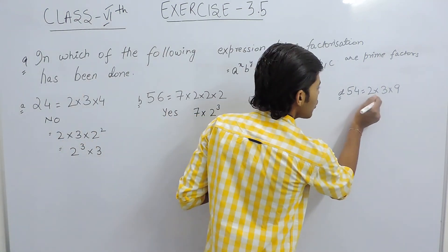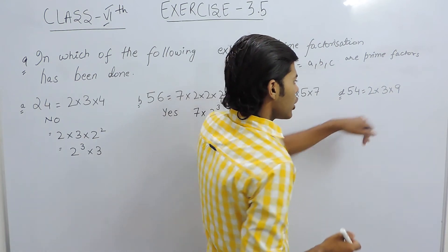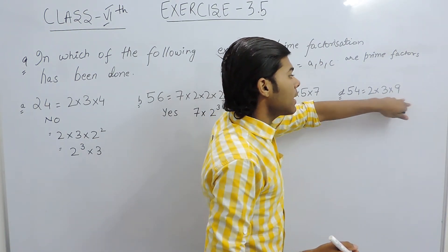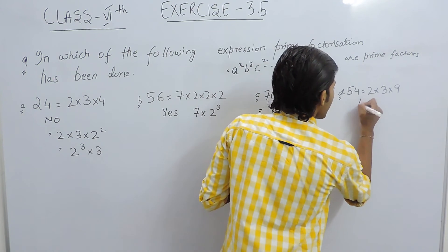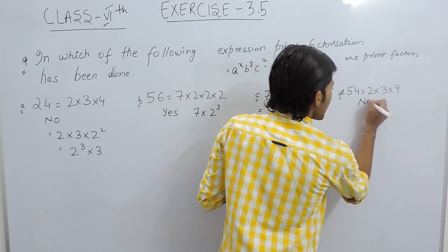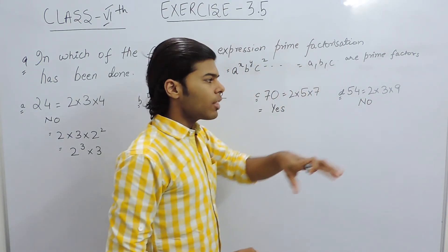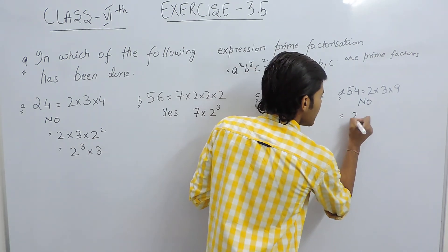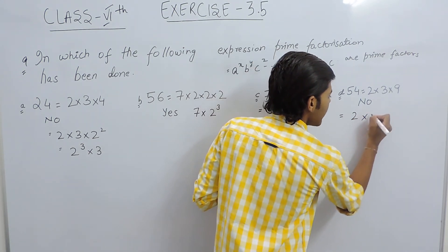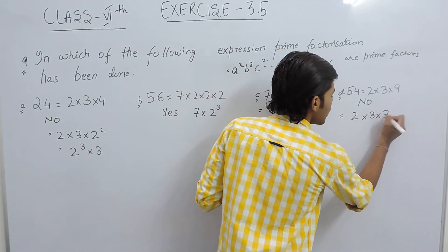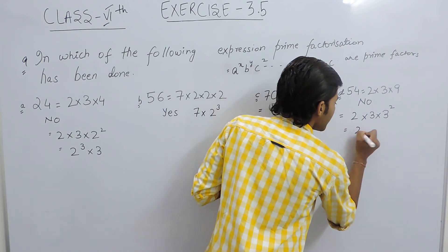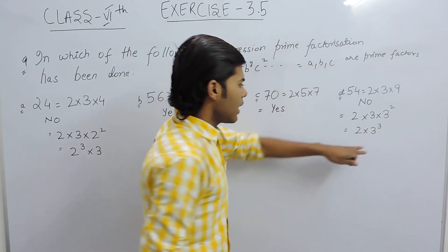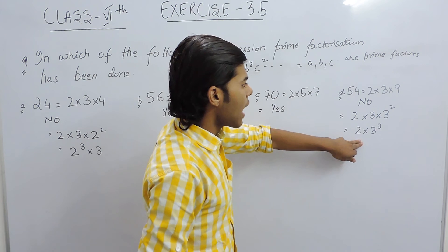Now in the last one, it is written 2, 3, and 9. Now 2 is a prime factor, 3 is a prime factor, but 9 is not a prime factor. So here, prime factorization has not been done. And if the prime factorization would have been done, then the answer would be 2 multiplied with 3 multiplied with 3 to the power 2, that is 2 multiplied with 3 to the power 3.